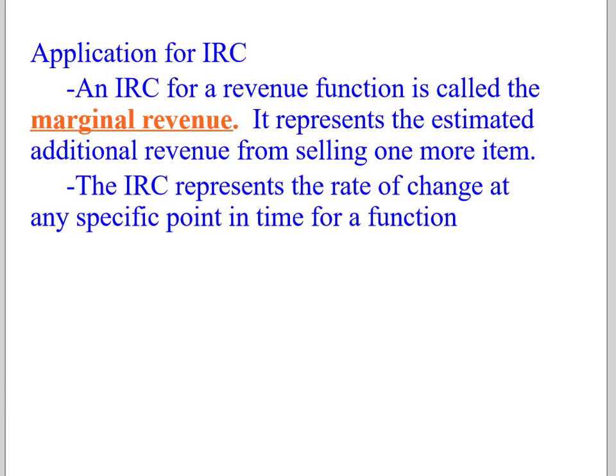So applications for IRC. An IRC for a revenue function is called the marginal revenue. It represents the estimated additional revenue from selling one more item. So if you're a business, this is a way you can see if I produce one more item, how much money am I making, and where should I potentially terminate how many items I make. So the IRC represents the rate of change at any specific point in time for a function.